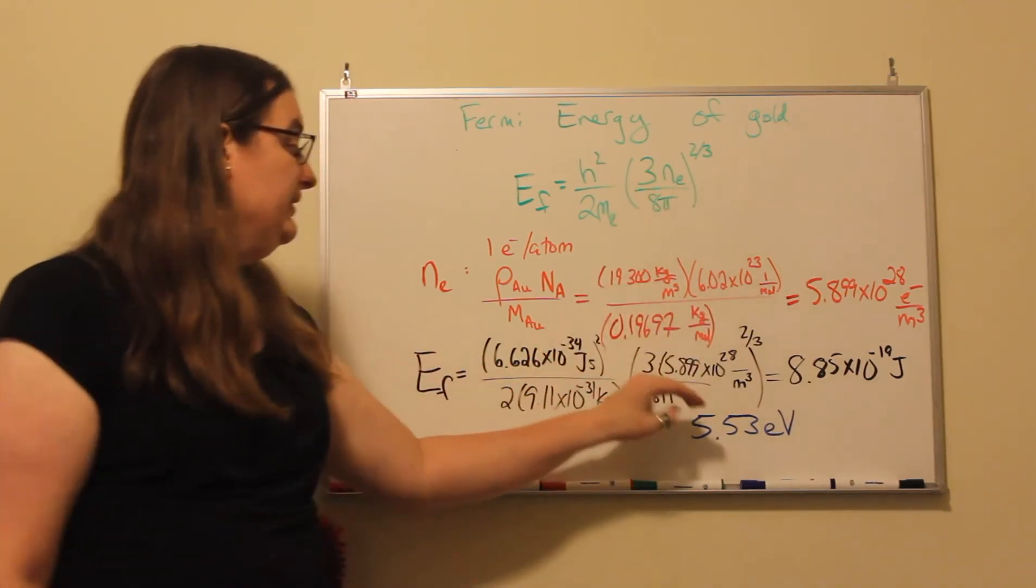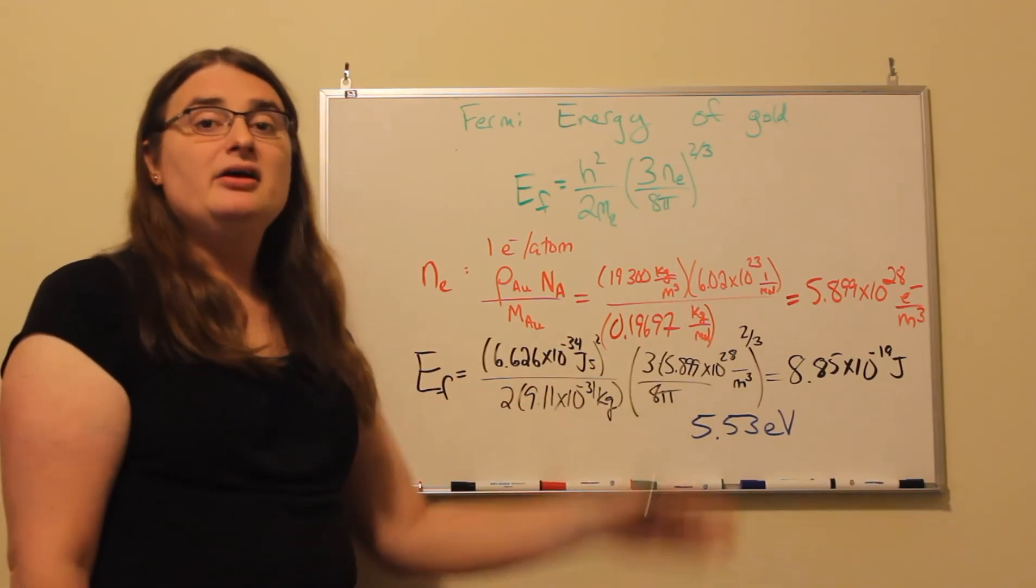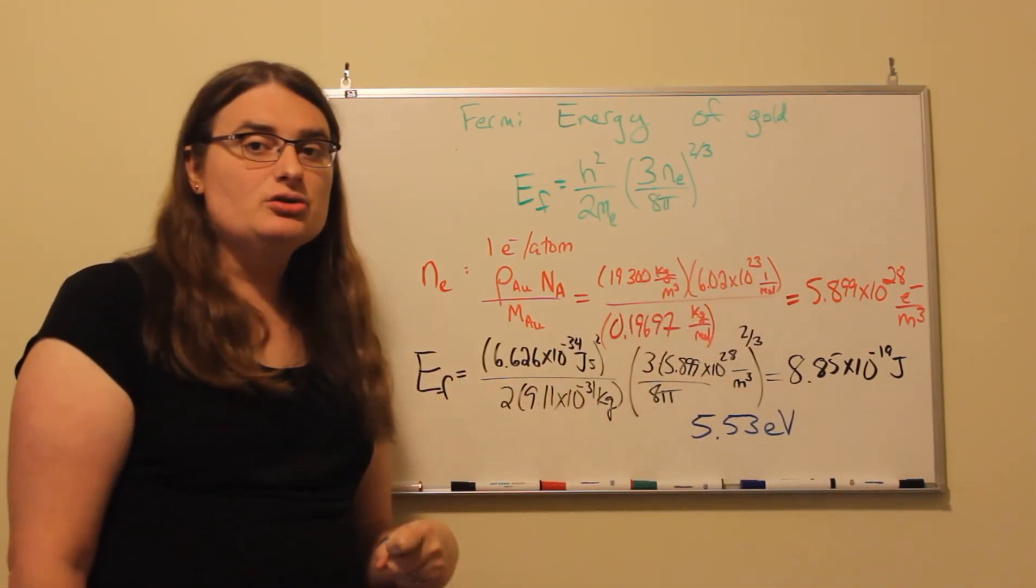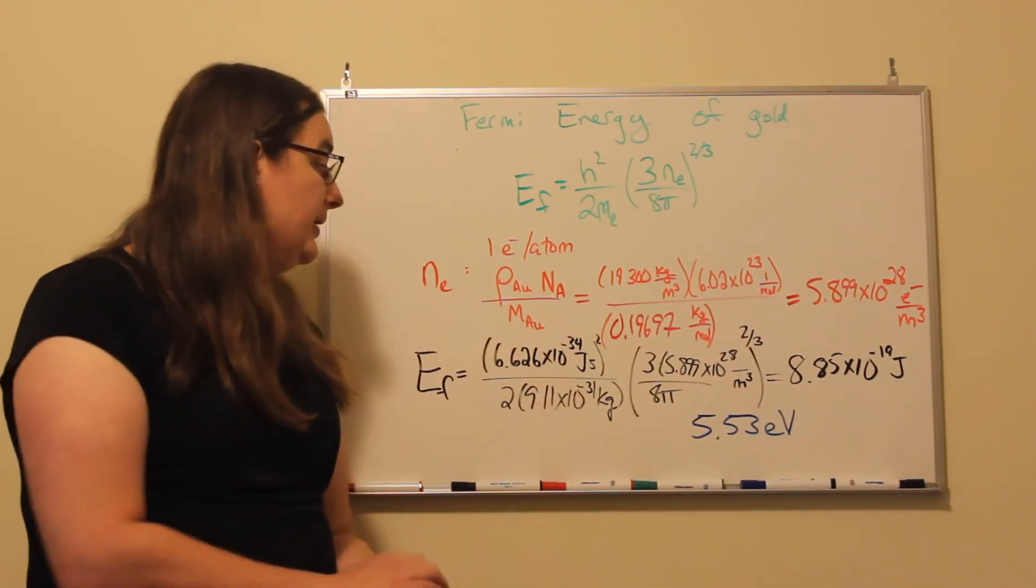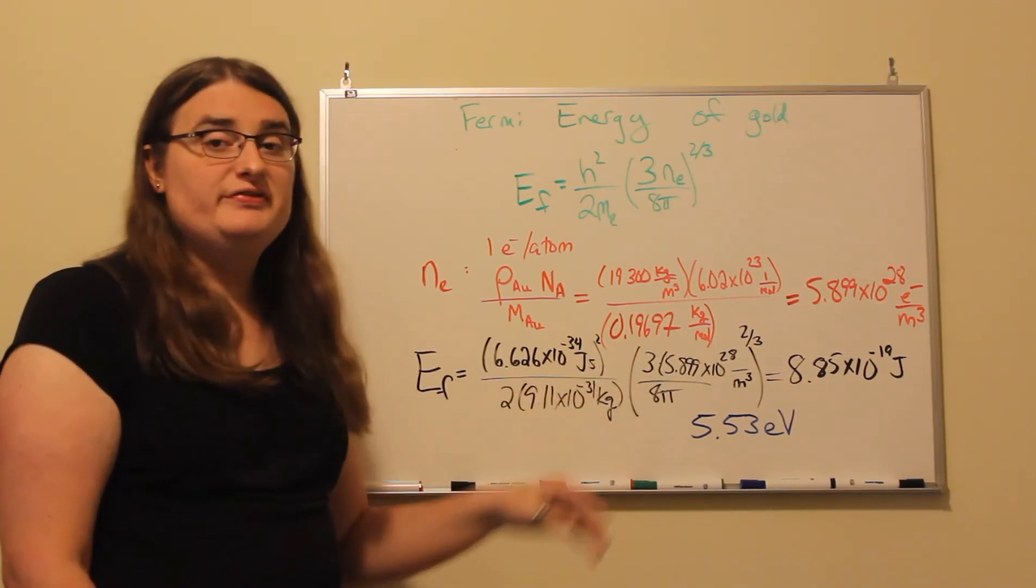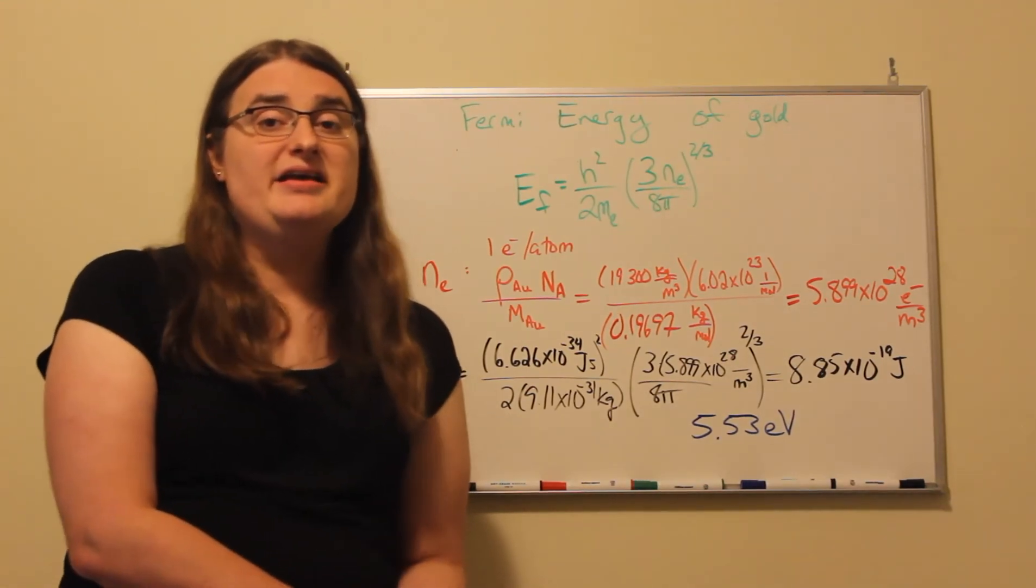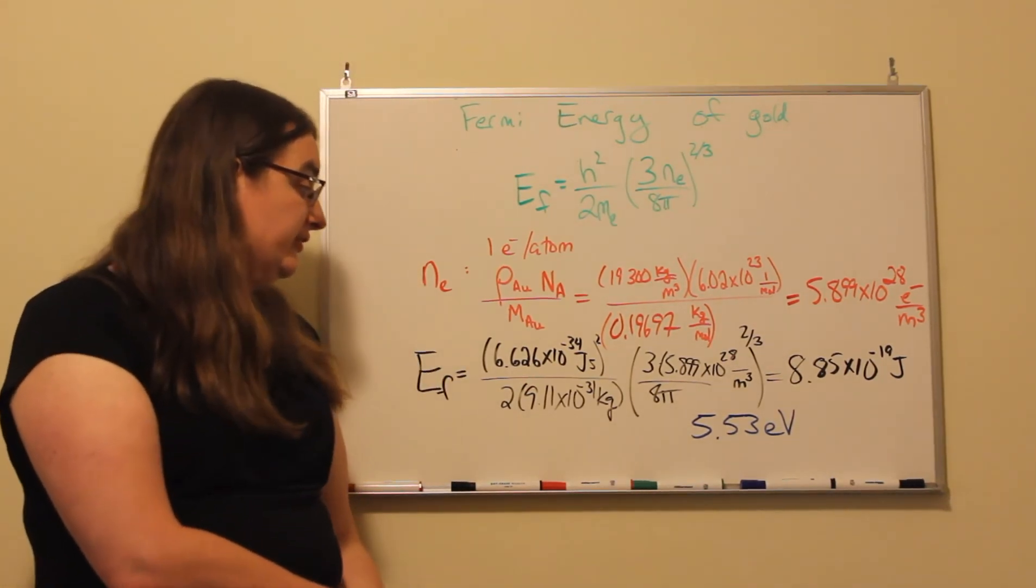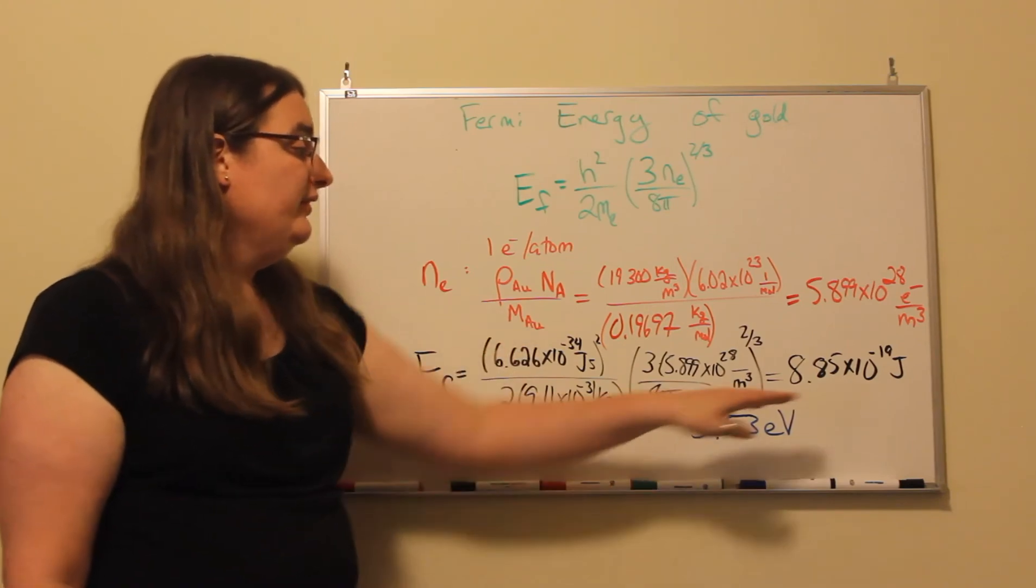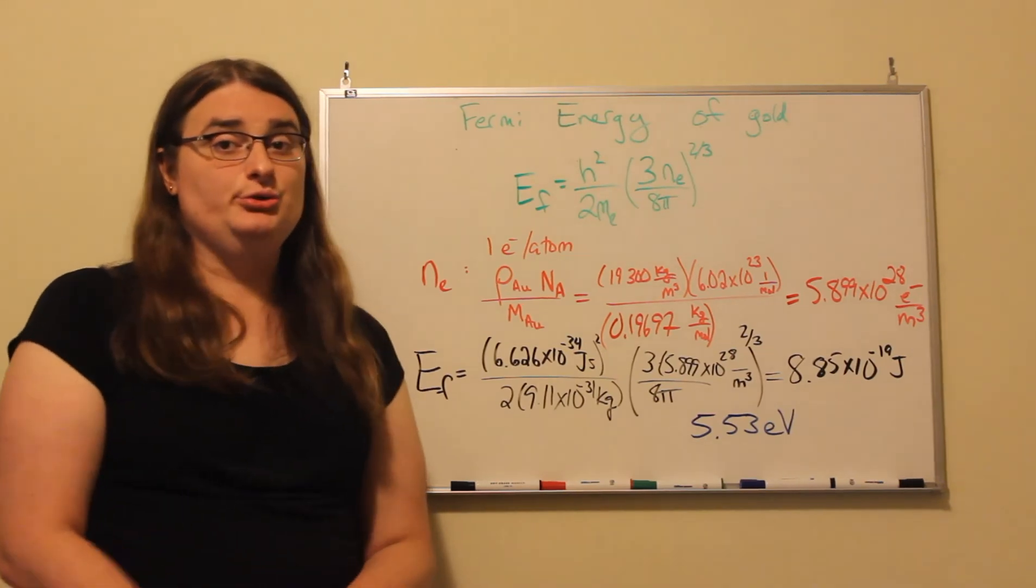So if I plug that into the Fermi equation, multiply it by 3, divide by 8 pi, square it and take the cube root, multiply by Planck's constant squared, divide by 2, divide by the mass of an electron, 9.11 times 10 to the negative 31 kilograms, and I end up with an energy of 8.85 times 10 to the negative 19 joules.